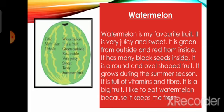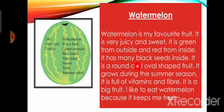Here is another paragraph about watermelons. Do you like watermelons? Let's read what the writer wants to tell us: 'Watermelon is my favorite fruit. It is very juicy and sweet. It is green from outside and red from inside. It has many black seeds inside. It is a round and oval shaped fruit. It grows during the summer season. It is a fruit of vitamins and fiber. It is a big fruit. I like to eat watermelon because it keeps me fresh.'